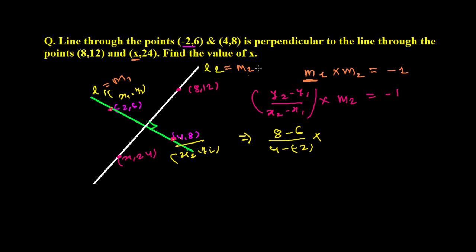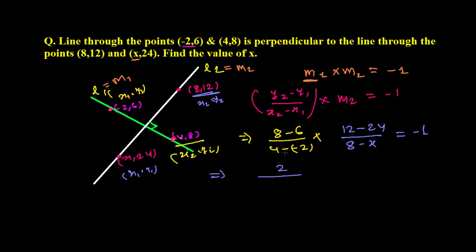For slope m2, we write it in terms of x since we don't know the value of x. Taking (8, 12) as (x1, y1) and (x, 24) as (x2, y2), slope m2 = (12 - 24) / (8 - x) = -12 / (8 - x). Now applying the perpendicularity condition: (2/6) times (-12 / (8 - x)) = -1.